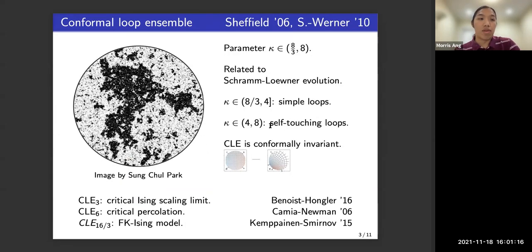The conformal loop ensemble was introduced by Sheffield and shown to be canonical by Sheffield and Werner. It has a parameter kappa between 8/3 and 8, which roughly speaking controls the roughness of the loops. So this diagram here is a simulation of a critical Ising model, and these very fractal loops that arise here are going to be the CLE with kappa equal to 3.